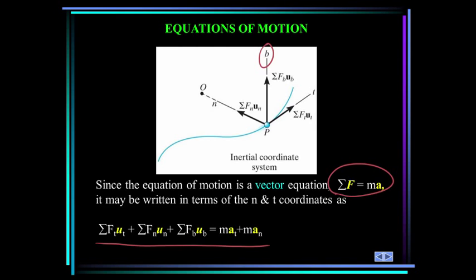We can write the scalar version of this equation. The summation of forces in the tangential direction is equal to mass times the acceleration in the tangential direction. And likewise for the normal direction.